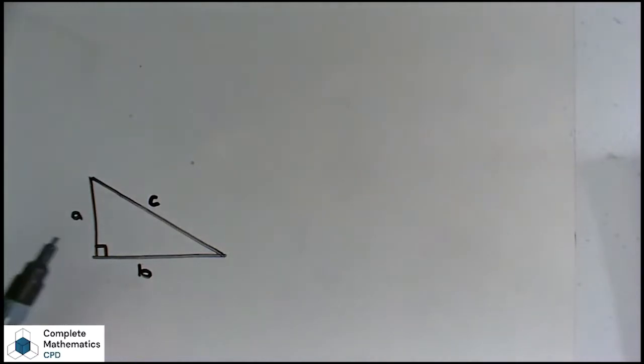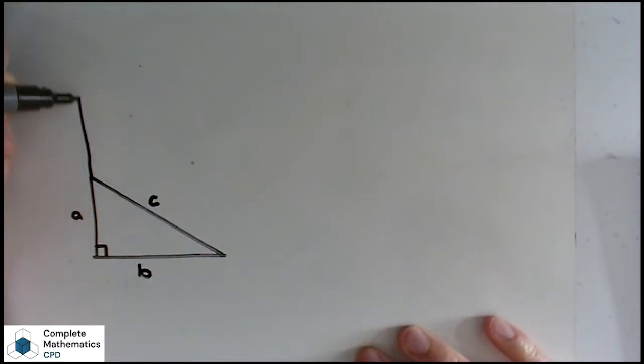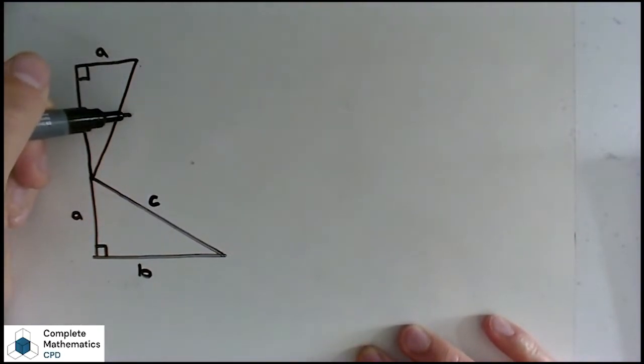To start with, we've got this right-angled triangle here, labelled up as standard with the hypotenuse C, and we're going to make an exact copy of this triangle. So up here, this length here is going to be B, we've got this right angle here, so this length here is A, and then draw on the hypotenuse C.